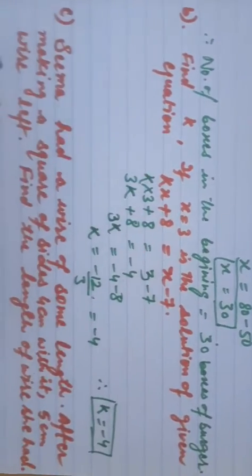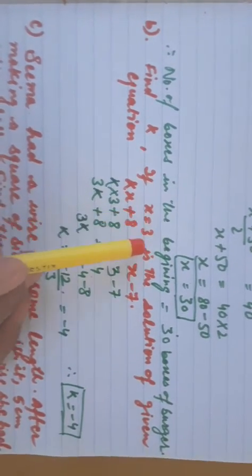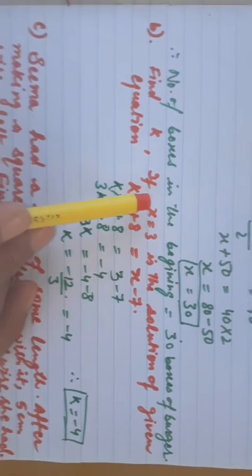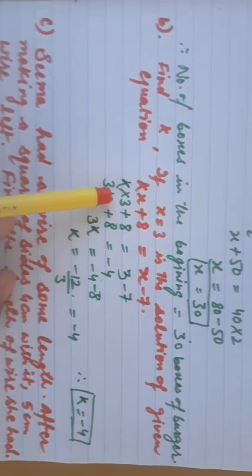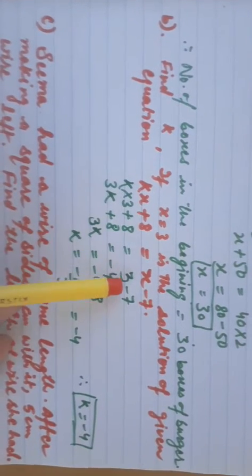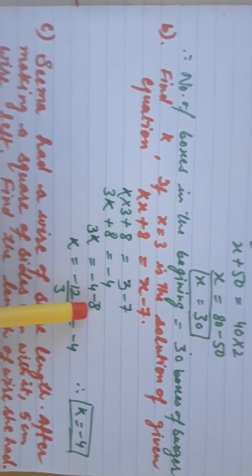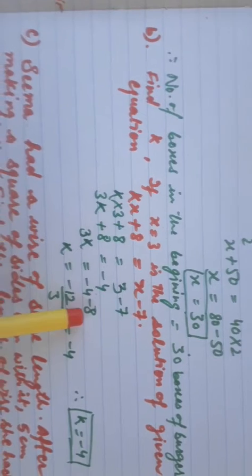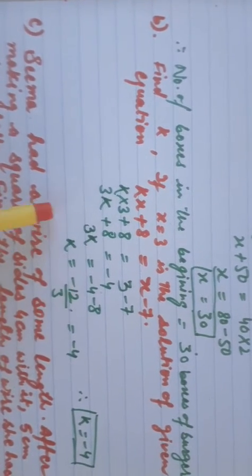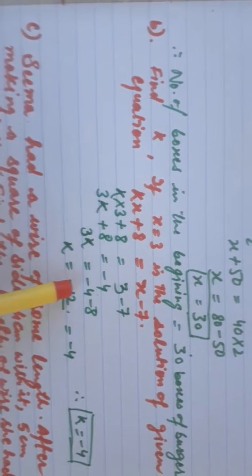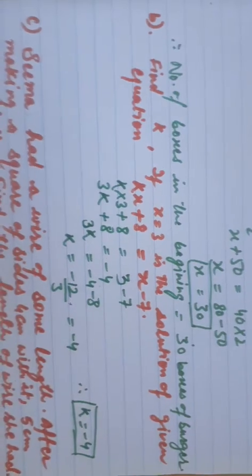Part B2: find the value of k if x equals 3 is a solution of the given equation. Substituting x equals 3: k times 3 plus 8 equals 3 minus 7, so 3k plus 8 equals minus 4. Moving 8 to the right gives 3k equals minus 4 minus 8, which is minus 12. Dividing by 3, k equals minus 4.